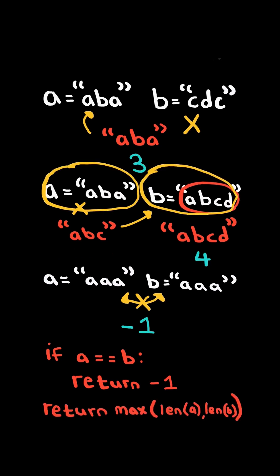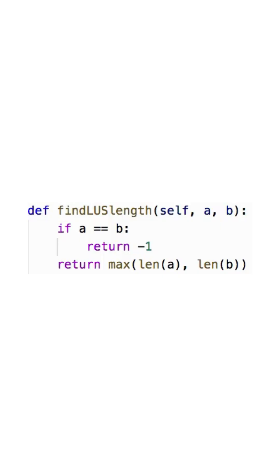Now if A does not equal B, then the longest uncommon subsequence will be the length of the longest string. And here's the code to do so.